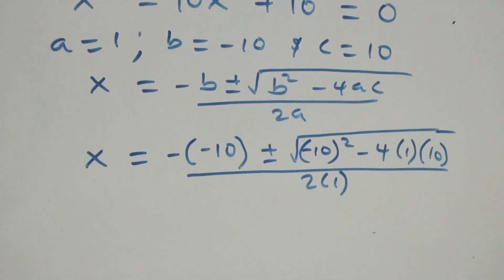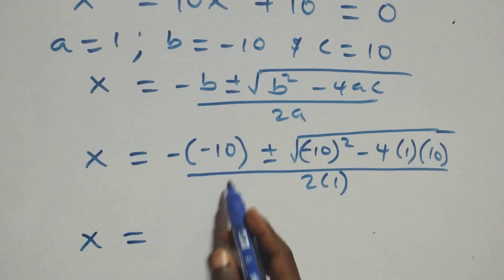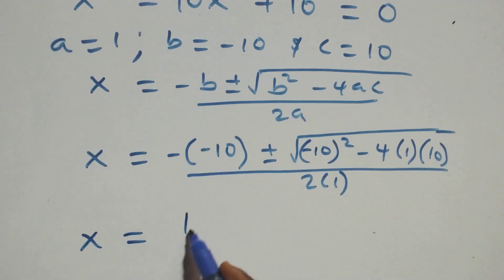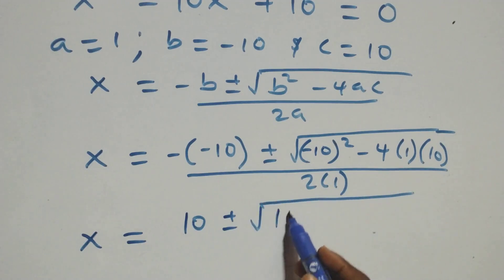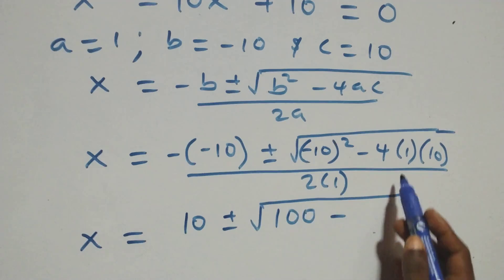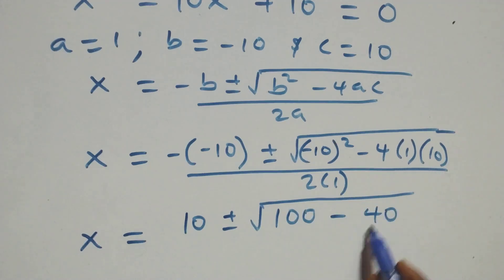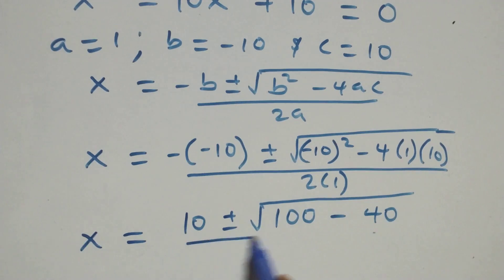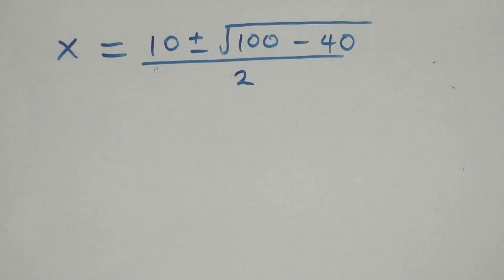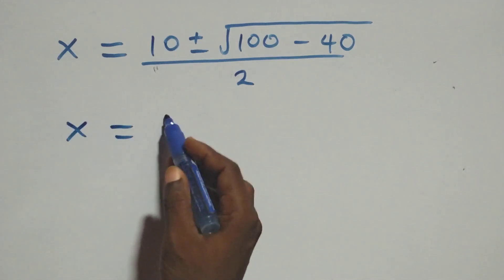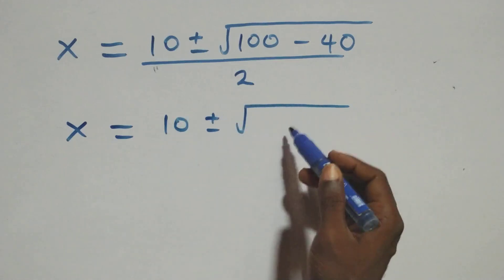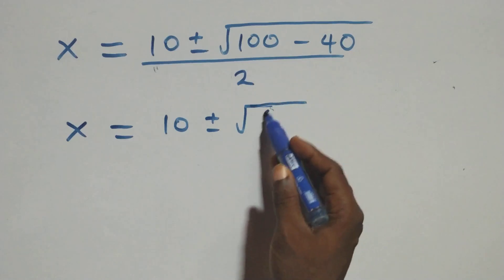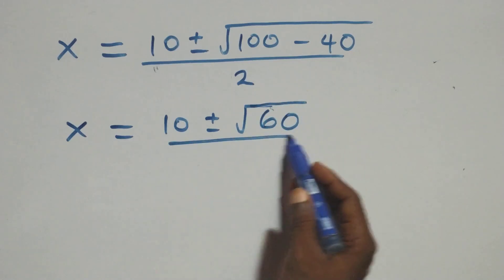Here we have x equals minus times minus, that's plus, so this is 10 plus or minus square root of minus 10 squared — that's 100 — minus 4 times 1 times 10, that's 40, all over 2 times 1, which is 2. So x equals 10 plus or minus square root of 100 minus 40, that gives us 60, over 2.